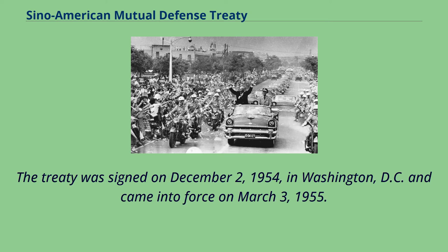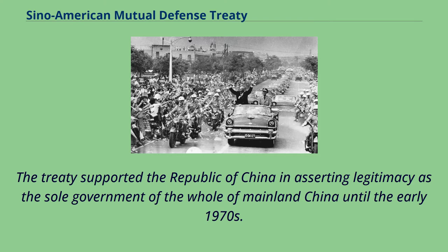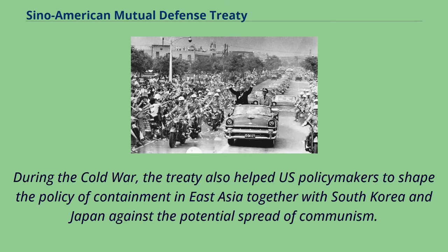The treaty was signed on December 2, 1954, in Washington, D.C., and came into force on March 3, 1955. The treaty supported the Republic of China in asserting legitimacy as the sole government of the whole of mainland China until the early 1970s. During the Cold War, the treaty also helped U.S. policymakers shape the policy of containment in East Asia, together with South Korea and Japan, against the potential spread of communism.